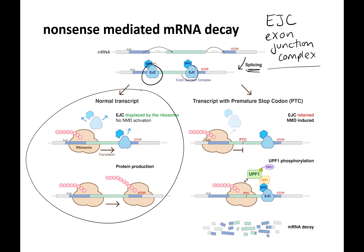Here's your normal transcript. The exon junction complexes are displaced as the ribosome comes on — it just knocks them off. The ribosome goes all the way to the stop codon and disassembles. This is now a good mRNA because all the exon junction complexes were removed, and the cell reads this as: this is a good mRNA.